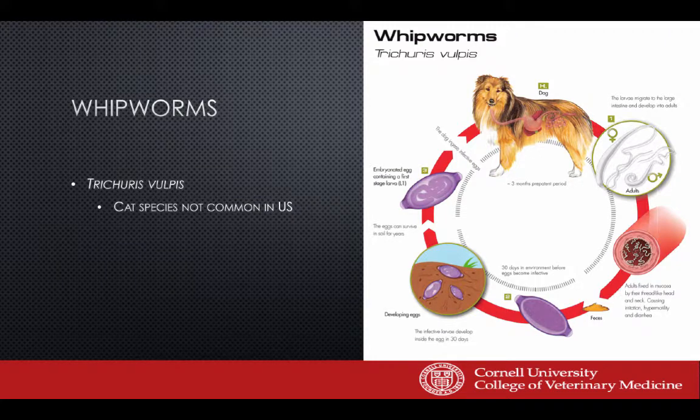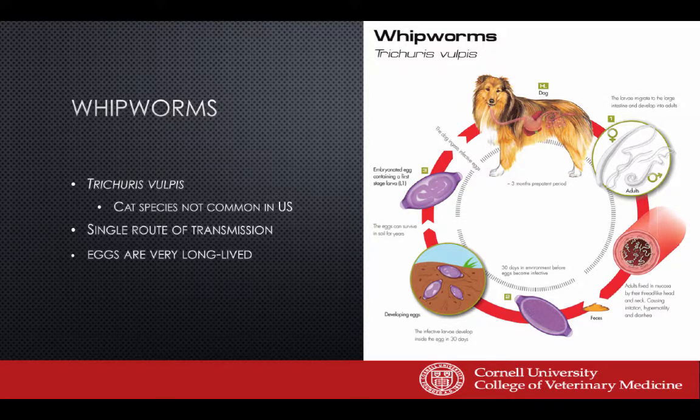Whipworms: a cat species of whipworm exists but isn't very common in the US — we may start seeing more from the Caribbean, e.g., in Florida. The dog whipworm has only a single route of transmission: ingestion of eggs from the environment. Again, these have to be really old poop — eggs must mature for at least a month. Eggs can last 8 to 10 years in soil. There's a three-month prepatent period, meaning it takes three months from ingestion of an infective egg to when the dog starts shedding eggs in feces. A single treatment won't remove all worms; treating once a month for three months can eliminate them if there's no reinfection.